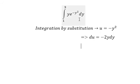Because we have y and dy but here we have negative 2, we divide both sides with negative 2 and you get du over negative 2 equals y dy.